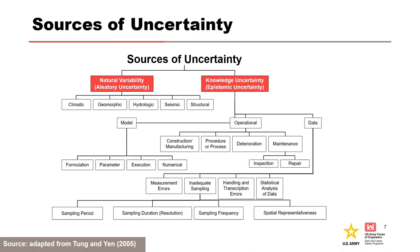Here are some different sources of uncertainty, adapted from Tung and Yin, categorized as either natural variability or knowledge uncertainty. Keep in mind that some things in risk analysis can have uncertainty that falls under both categories, like a stage frequency curve — there is natural variability in the flood inflow, but also knowledge uncertainty in many of the parameters that enter the model, like runoff coefficients and loss rates.